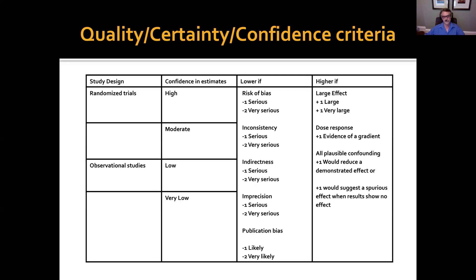Observational studies start as low certainty or quality of evidence, but they can be rated up, most commonly for a large or very large effect. In terms of large or very large effects, we're looking at things like dialysis for people with renal failure, hip replacements for people with hip osteoarthritis — large and quick effects that may lead us to be moderately or even highly certain. So that's the fundamentals of the GRADE approach for conventional meta-analysis comparing A to B.